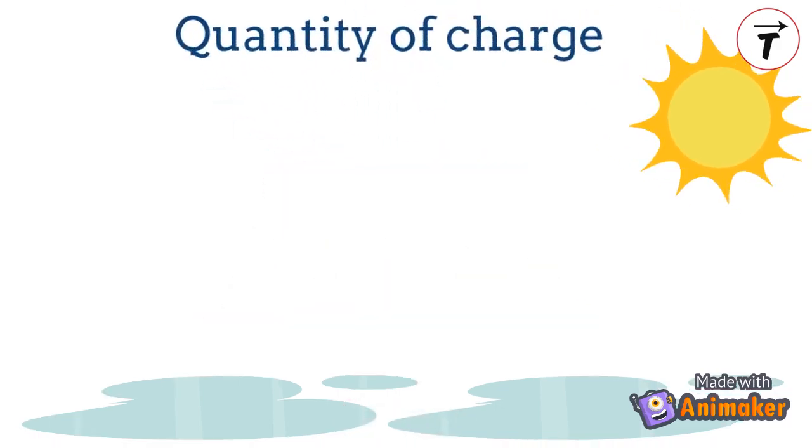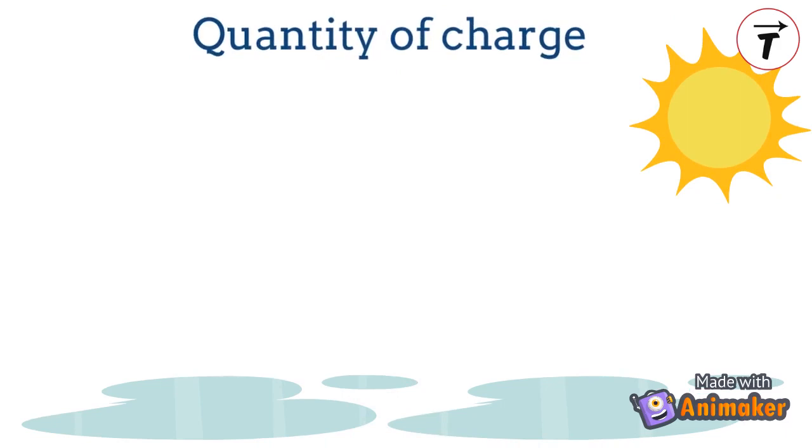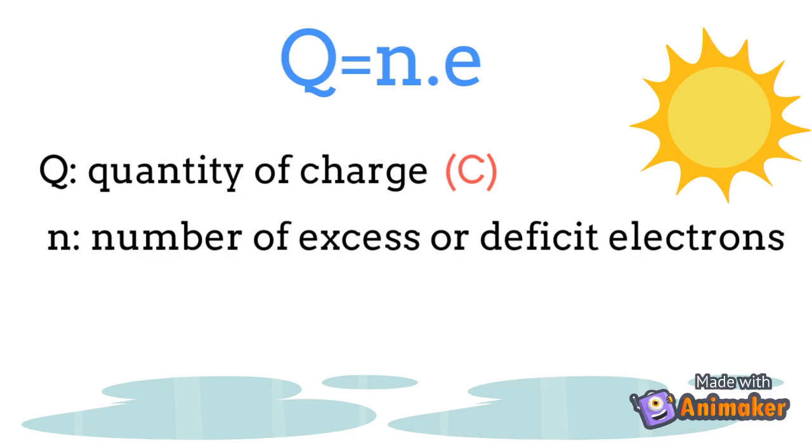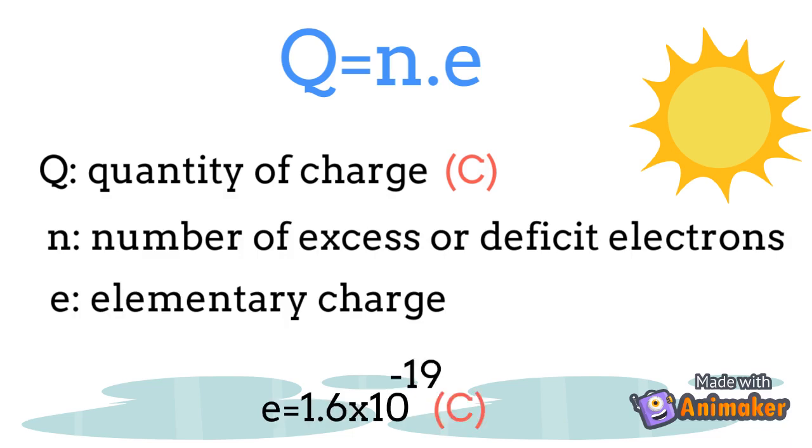The quantity of charge depends on the number of gained or lost electrons: q equals n times e, where q is the quantity of charge in coulombs, n is the number of lost or gained electrons, and e is the charge of one electron, also known as the elementary charge. The absolute value of the magnitude of the elementary charge is 1.6 times 10 power minus 19 coulombs.